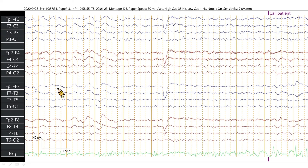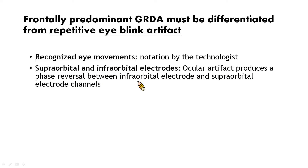FIRDA should be differentiated from eye-blinking artifacts. The contour of eye blink artifacts may be sharper, and the field is smaller than FIRDA. Most importantly, we can recognize eye movement by the notation of technologists and supraorbital and infraorbital electrodes, because ocular artifacts produce a phase reversal between infraorbital and supraorbital electrode channels.